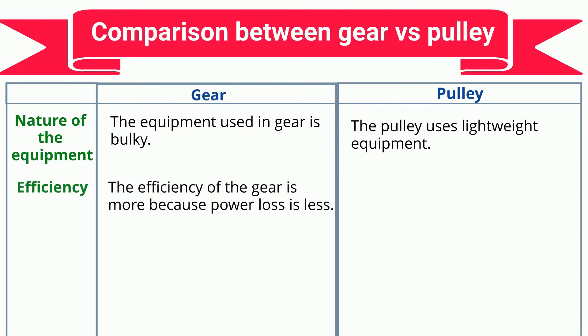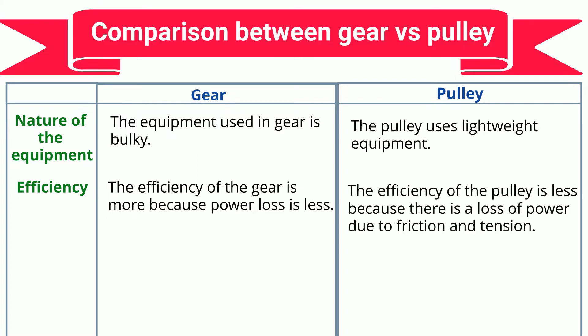Efficiency: The efficiency of the gear is more because power loss is less. The efficiency of the pulley is less because there is a loss of power due to friction and tension.